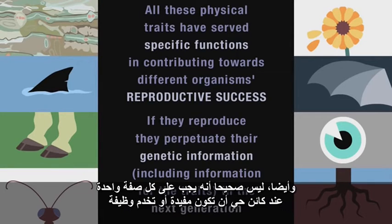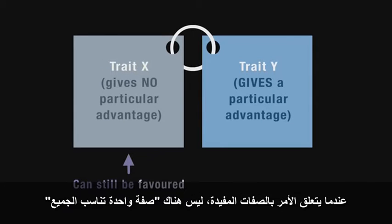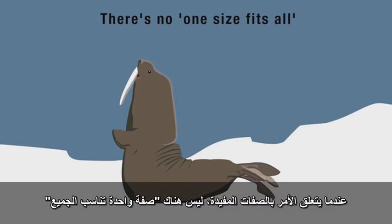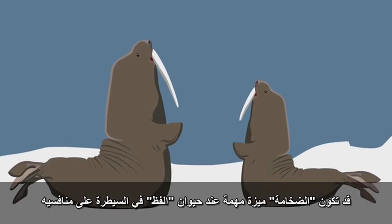But it's not true that every single trait of a living organism must be advantageous. For example, traits that give no particular advantage can still be favoured if they're associated with other traits that do. When it comes to beneficial traits, there's no one-size-fits-all. Bulk may be a great advantage for a walrus wanting to dominate its rivals.